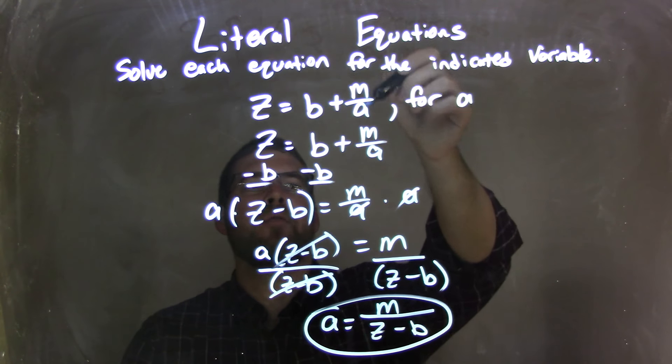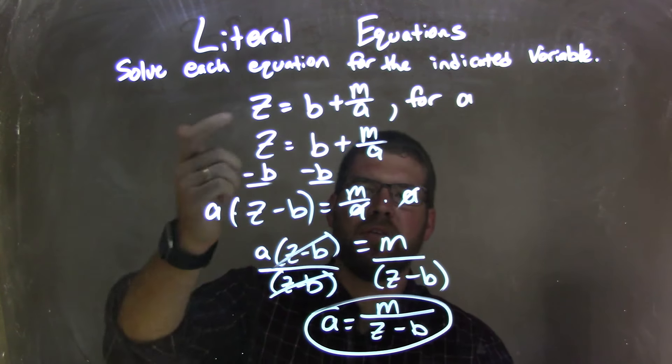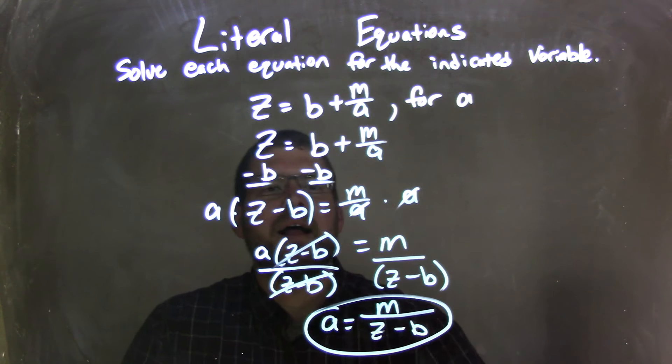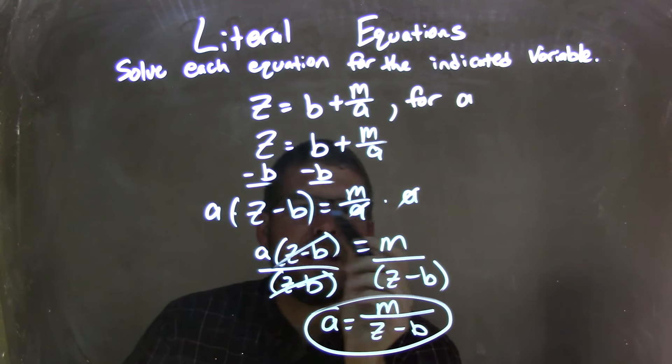We're given z equals b plus m over a, and we need to solve that for a. I rewrote my equation, and I subtracted b to both sides. Then from there, I was left with z minus b equals m over a.